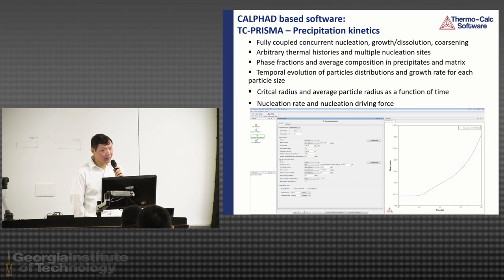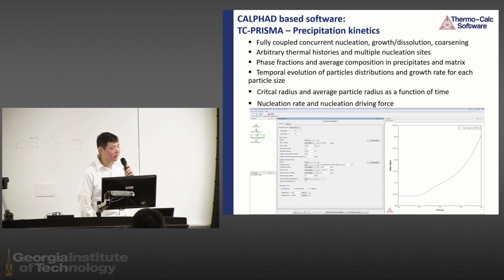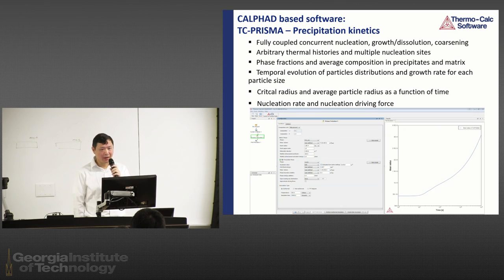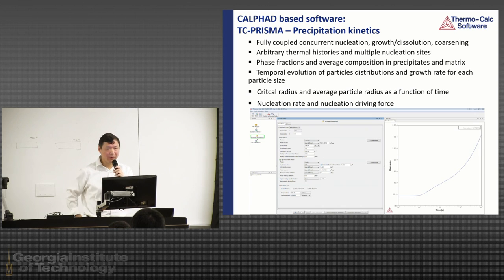TC-PRISMA is a relatively young software tool to simulate precipitation kinetics. It uses a nucleation model and can consider concurrent nucleation, growth, dissolution, and coarsening processes. It's based on the Langer-Schwartz theory — a mean-field approach. We can use arbitrary thermal history and multiple nucleation sites to simulate precipitation of multiple phases at different nucleation sites — either grain boundaries for Zener pinning effects or within the bulk to simulate precipitation strengthening effects. The information provided includes phase fraction, composition in the precipitate and matrix, and the particle size distribution of different precipitates. This information is very helpful for building strengthening models to simulate mechanical properties.